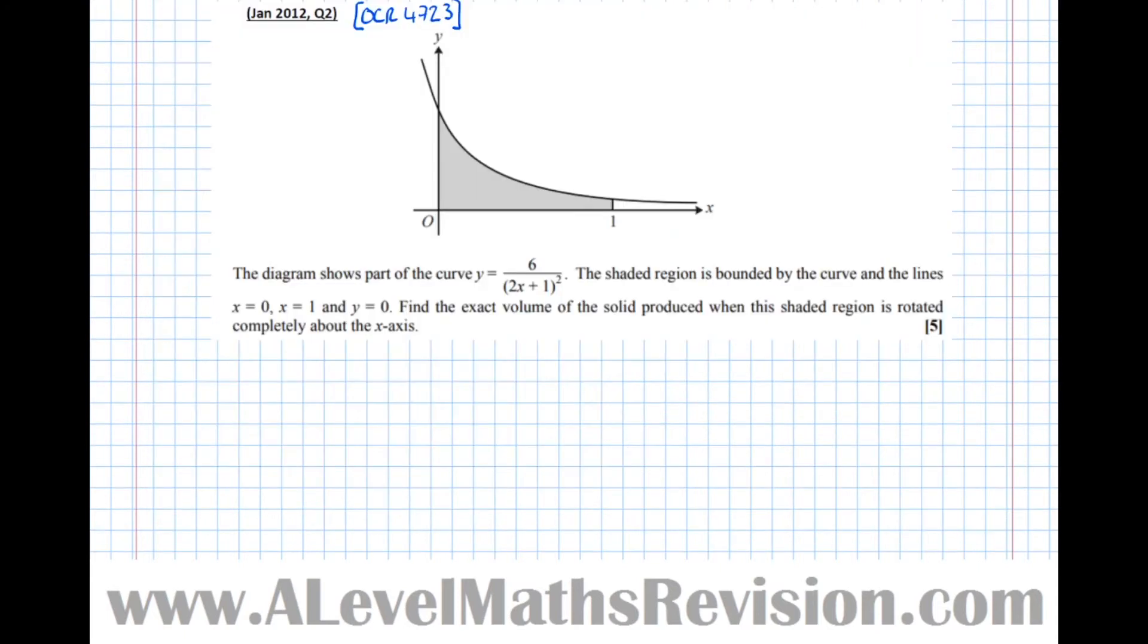Let's have a look at an example question. This question says that the diagram shows part of the curve y equals 6 over 2x plus 1 squared. The shaded region is bounded by the curve and the lines x equals 0, x equals 1, and y equals 0. So that's basically just describing what's happening in the diagram. Find the exact volume of the solid produced when the shaded region is rotated completely about the x-axis. We're going to take this area and form a solid by just rotating it 360 degrees around the axis.